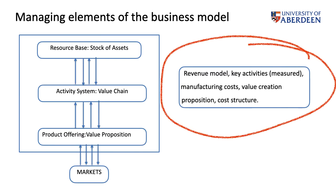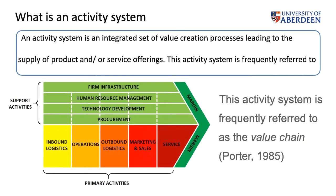The Activity System will be formed by key activities which determine the manufacturing costs, determine how value is created and what the value proposition is, and most importantly determine the cost structure. All these activities need to be measured, and when they're measured you're able to understand what your margin is. Your margin will be the difference between the total revenue and the cost of carrying out all the activities in your Activity System. We can define an Activity System as an integrated set of value creation processes leading to the supply of a product or service.